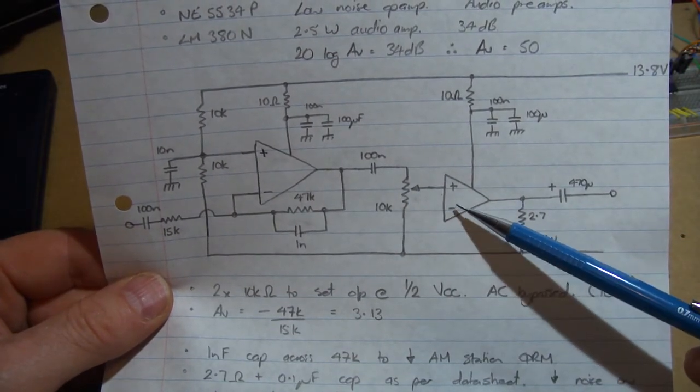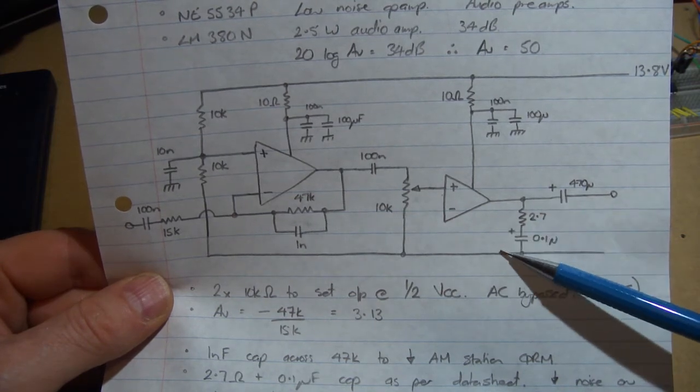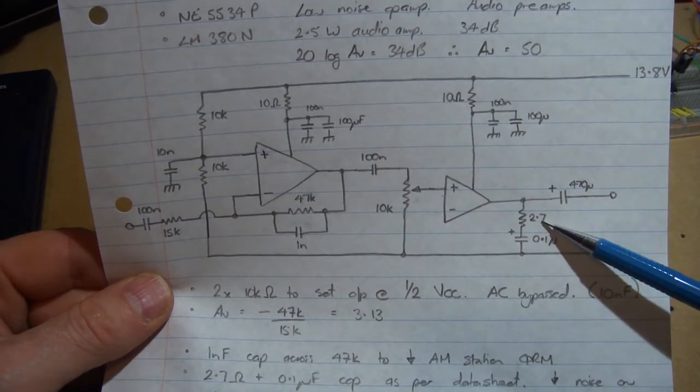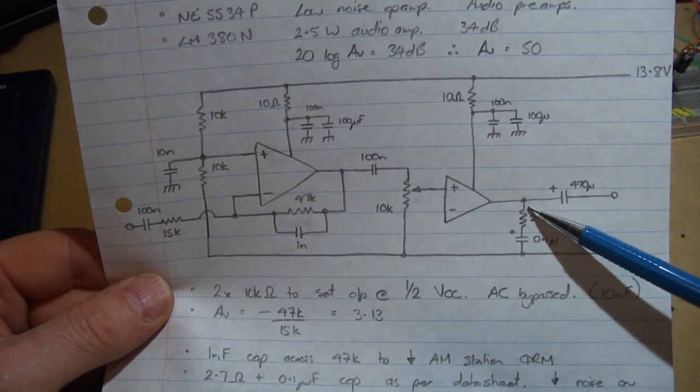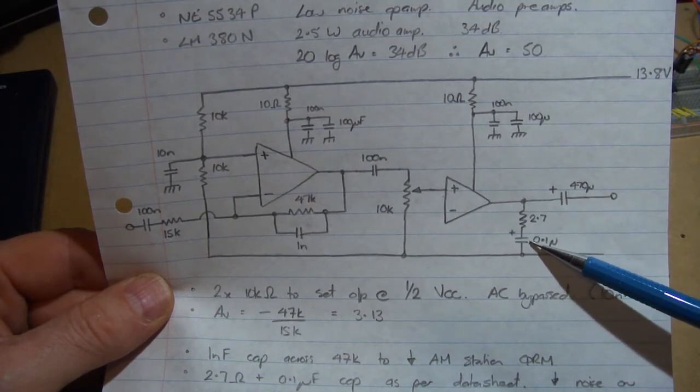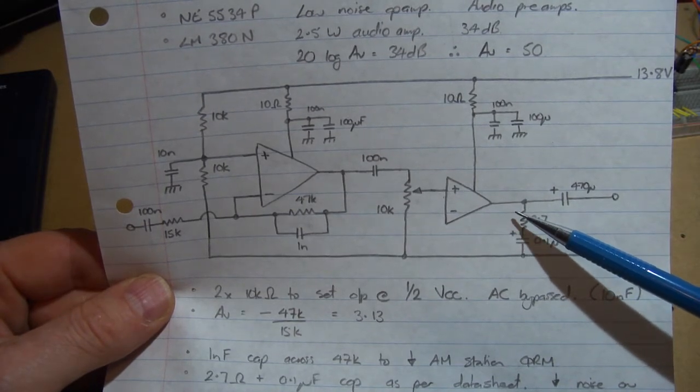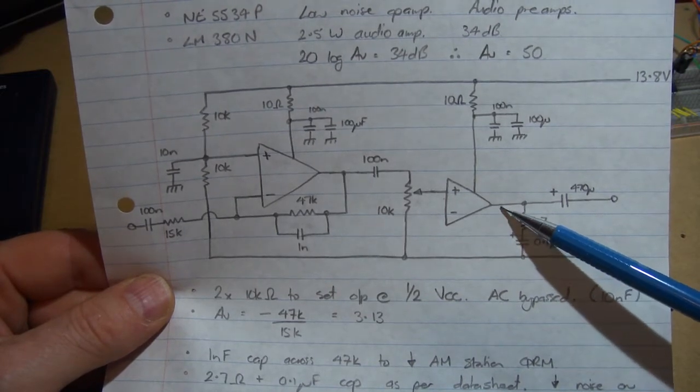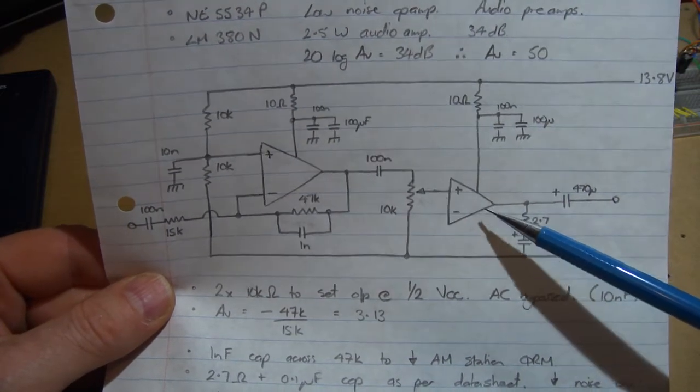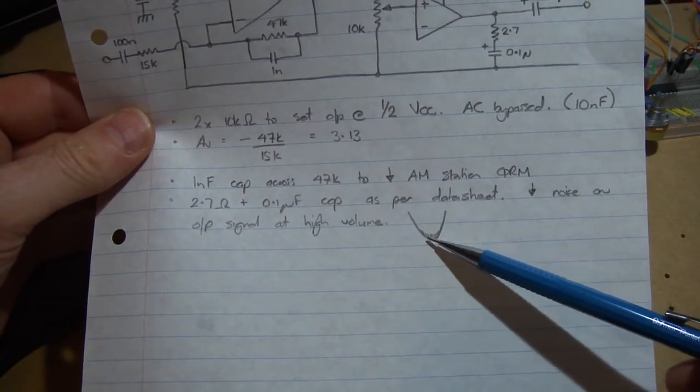The other interesting thing for the LM380N, if you look at the spec sheet, it talks about this little circuit at the end: a 2.7 ohm resistor and a 0.1 microfarad capacitor. Again, if you take that out, for low output levels, for most of the range it's fine, it's not a problem. But if you get to really high volume and you're really starting to push this hard, then you do get a little bit of interference, a little bit of fuzziness.